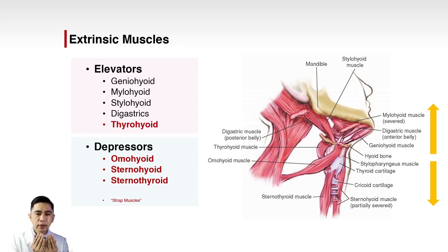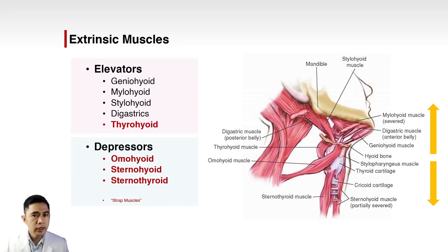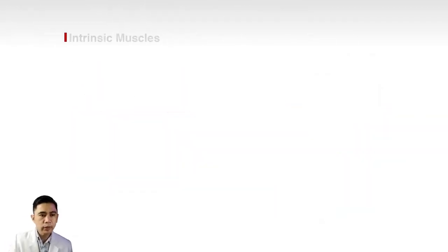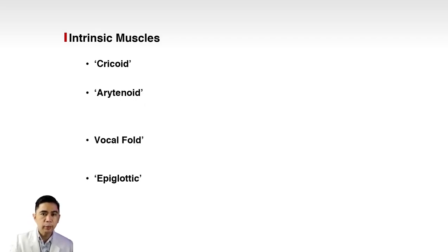The platysma is a very thin muscle just beneath the skin. If you open it up, you will find the strap muscles before seeing the laryngeal complex. To simplify discussion of the intrinsic muscles, we group them into four: the cricoid group, arytenoid group, vocal fold group, and epiglottic group. To remember, use the mnemonic CAVE.